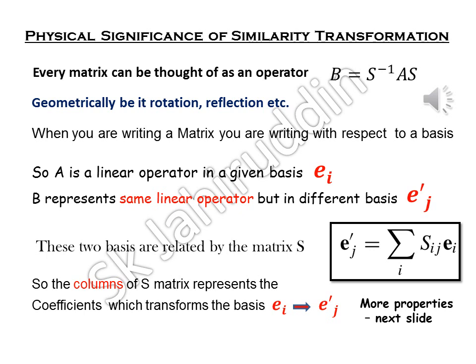If you think of 3 cross 3 matrices in Cartesian coordinate system, you can represent matrices as rotation, as reflection, etc.